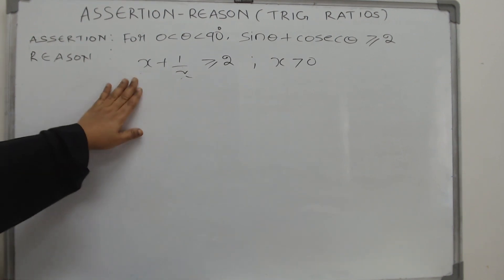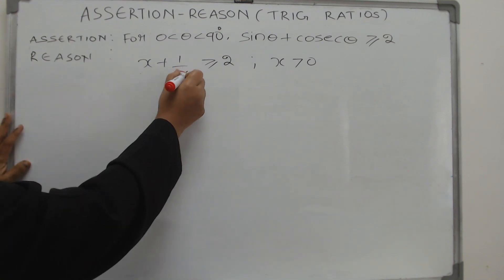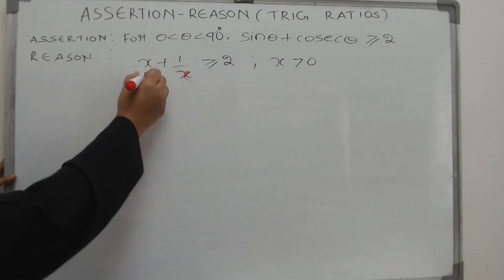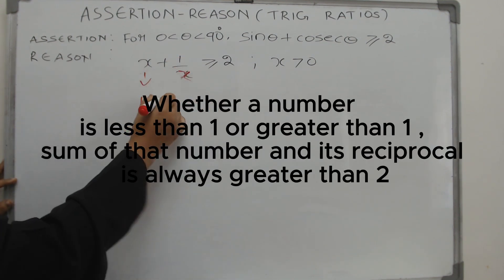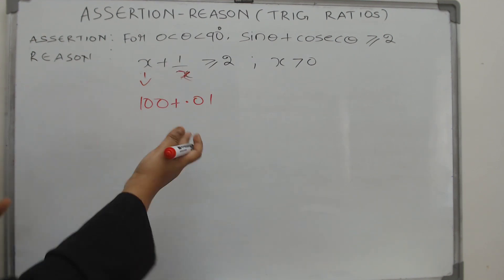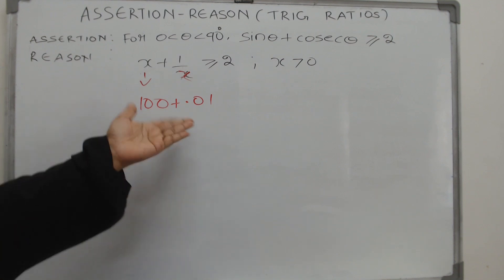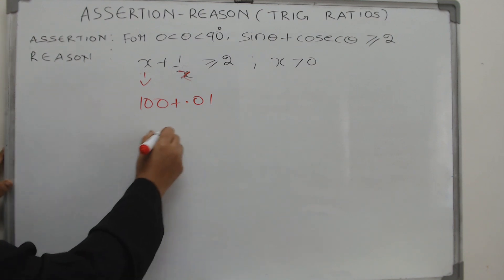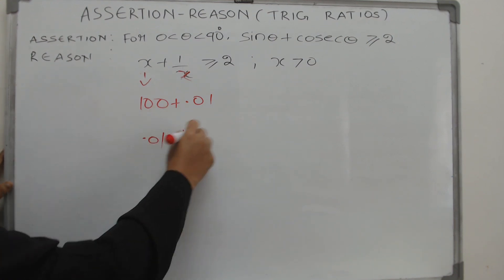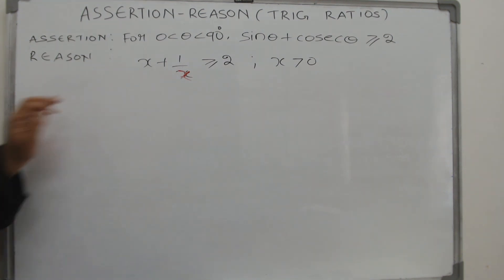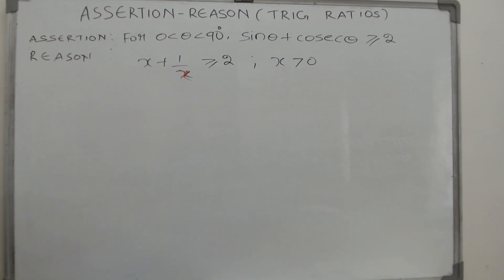Now let us start question one. It is common sense that x plus one by x is greater than or equal to two. Suppose x is something very large like 100 — then one by x is 0.01, and the sum is still over two. Or if x is very small like 0.01, then one by x is 100, and again the sum is much greater than two.